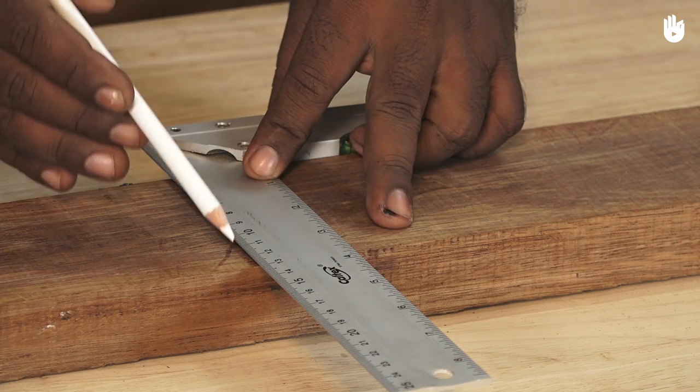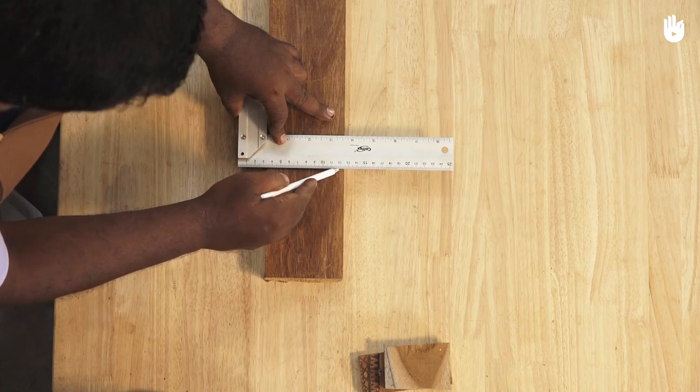Use a trisquare and a pencil to mark a line running through all four sides of the piece of wood.